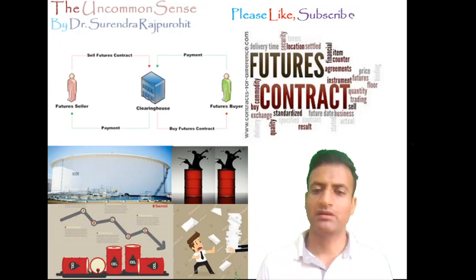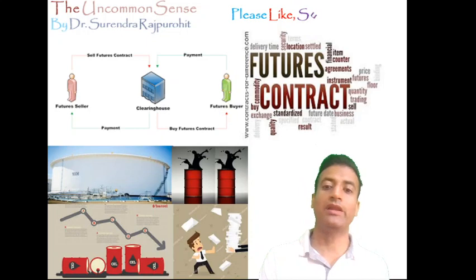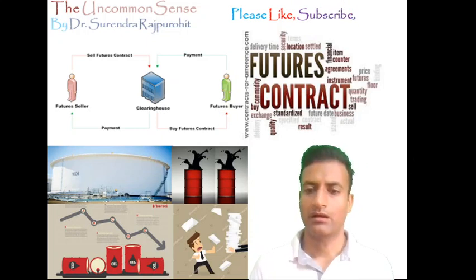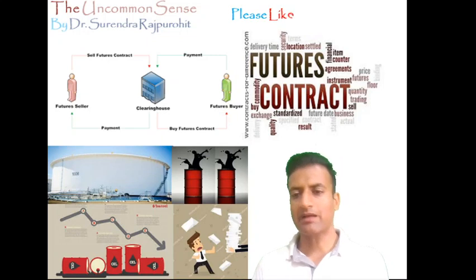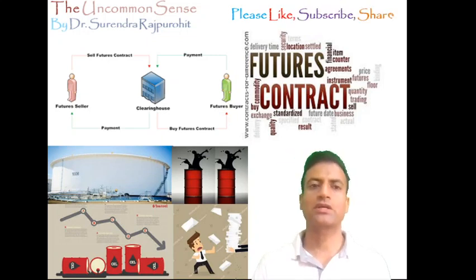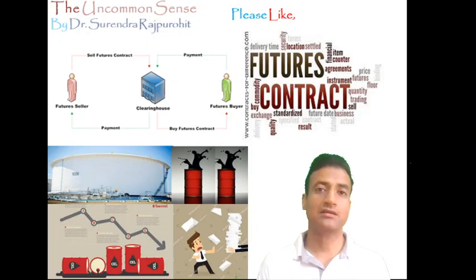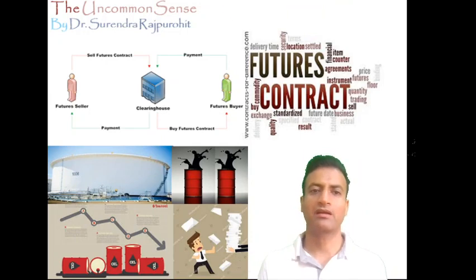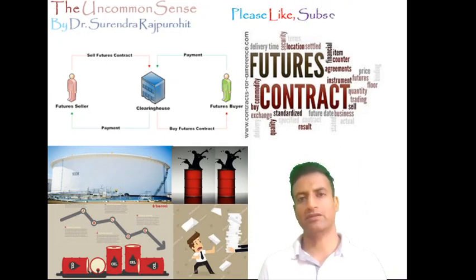21st of April was the deadline when futures contracts delivering oil in May were to expire. And by the time physical delivery is required on these contracts, storages are likely to be filled. That is the reason why traders went into a kind of panic and prices dove deep into negative territory.